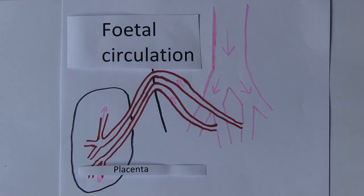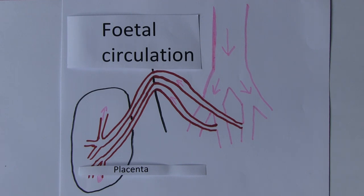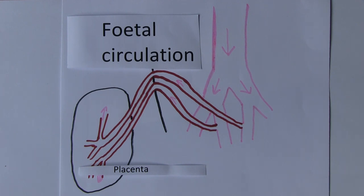Fetal blood reaches the placenta via two umbilical arteries. In early fetal life there are two umbilical veins, but later the right umbilical vein disappears, leaving one umbilical vein. So in later fetal life there are two umbilical arteries and one umbilical vein. An artery carries blood away from the fetal heart; a vein carries blood towards the fetal heart. Umbilical arteries carry blood from the fetus to the placenta; the umbilical vein carries blood from the placenta to the fetus.